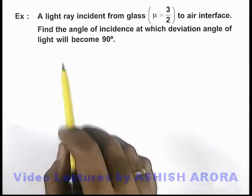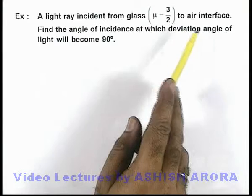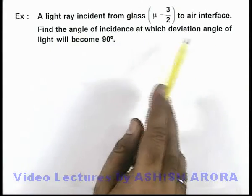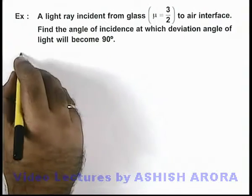In this example, we are given that a light ray is incident from glass to air interface, and we are required to find the incidence angle at which the deviation angle of light will become 90 degrees.